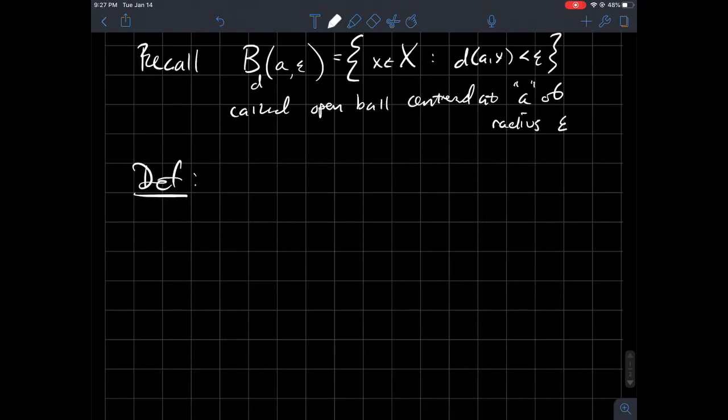So we will say that some set, say U - U is a good letter for open - so let's say U, if that's a subset of X, we'll say U subset of X is open. So this set is open.